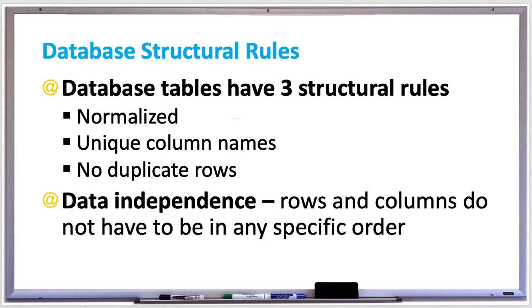A unique column or a key is used because it creates a non-clustered index by default, which makes querying data faster, and it makes it easier for the database to find the results that you're looking for.